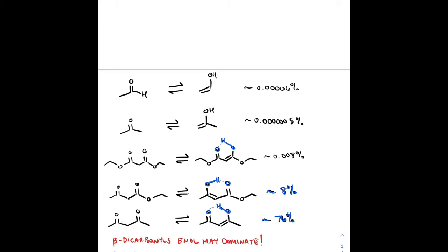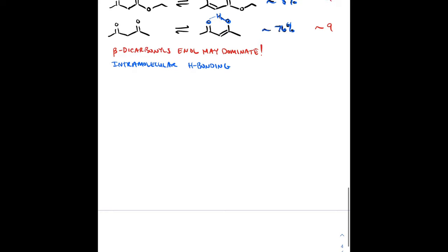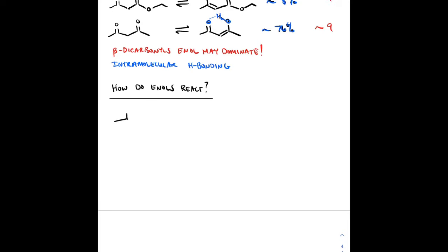Looking at the pKas — 17, 20, 13, 11, and 9 — they decrease as the percentage of enol increases, and that's no coincidence. In order for the enol to form, we have to remove that proton. If it's more acidic, it's easier to form the enol, and the compound is inherently more reactive.